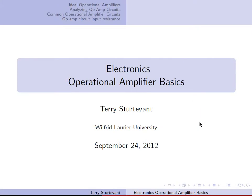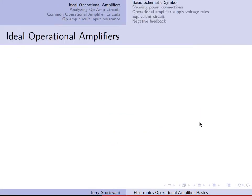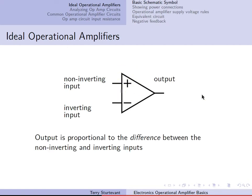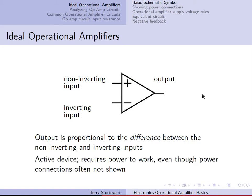This video is about the basics of operational amplifiers. An ideal operational amplifier has two inputs: the inverting input, denoted by the minus sign, and the non-inverting input, identified by the plus sign. It also has an output, and the output is proportional to the difference between the non-inverting and inverting inputs.